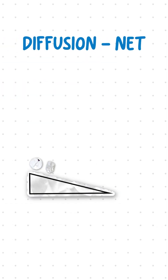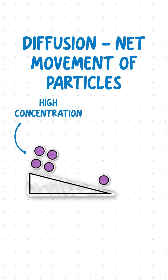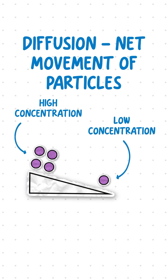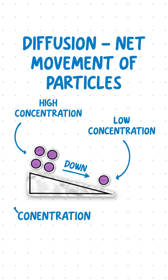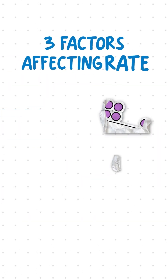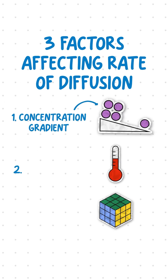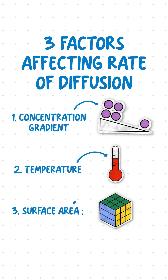Diffusion is the net movement of particles from an area of higher concentration to an area of lower concentration, down a concentration gradient. There are three factors affecting the rate of diffusion: concentration gradient, temperature, and surface area to volume ratio.